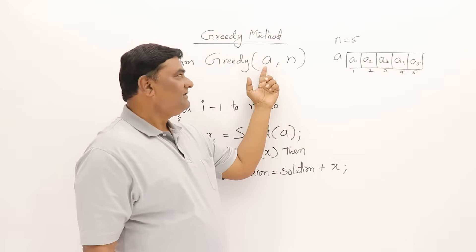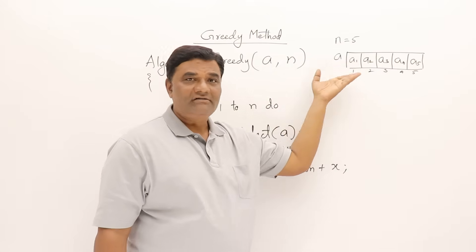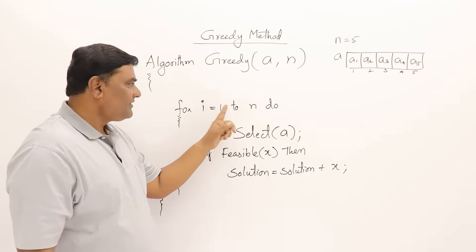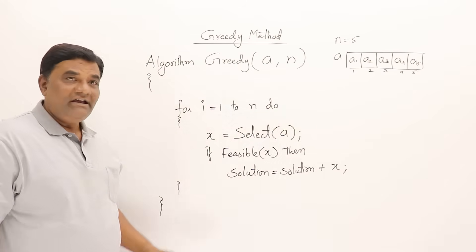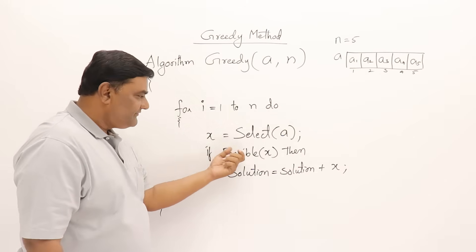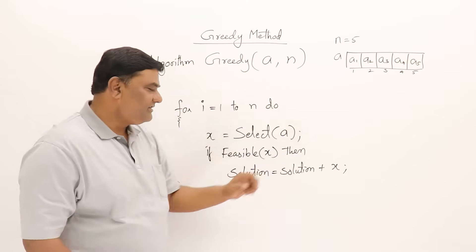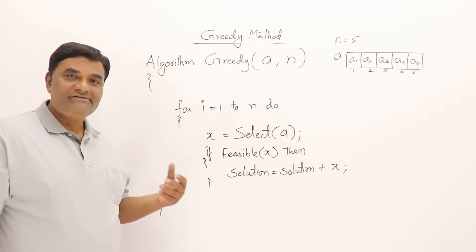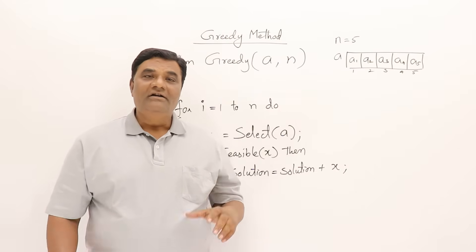In the general method: a problem is given with input of size n. It will go through all input values from 1 to n, and each time it selects something from the input, call it x. If that x is feasible, it is included in the solution. This is the general method — now I will explain the approach through an example.